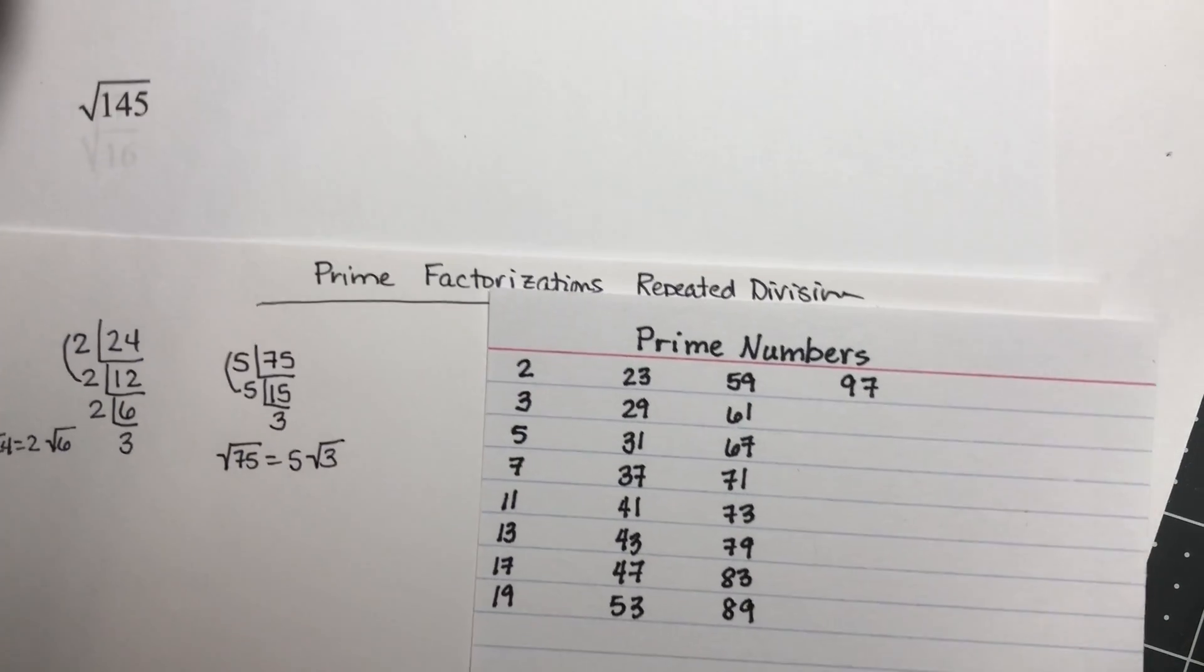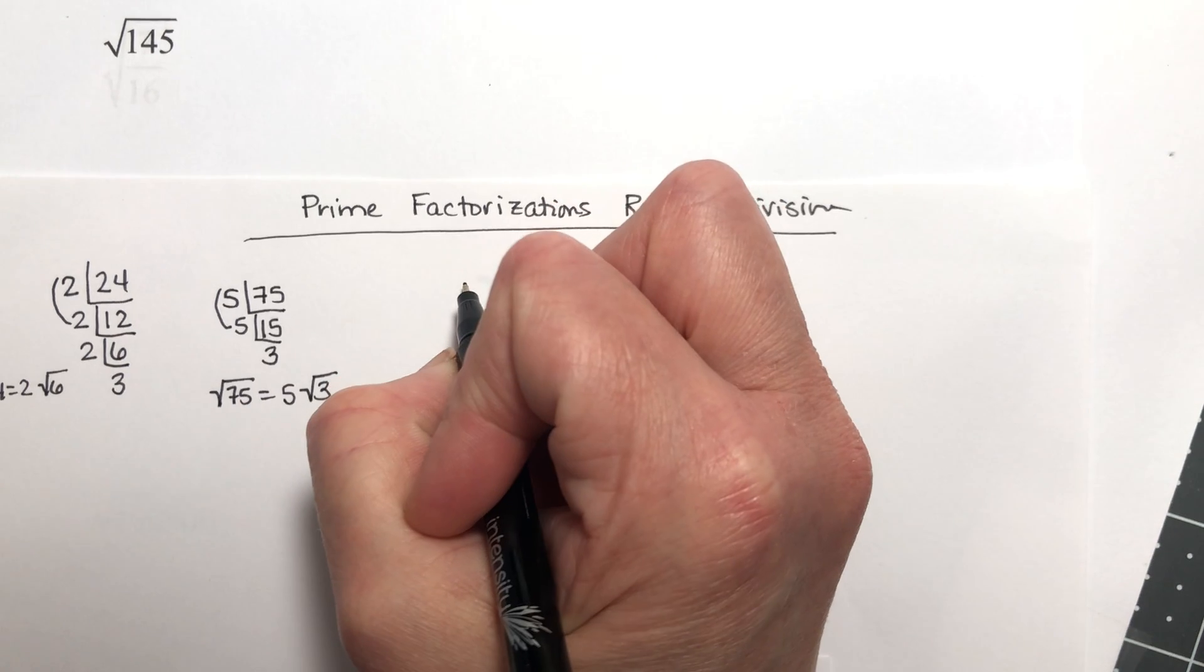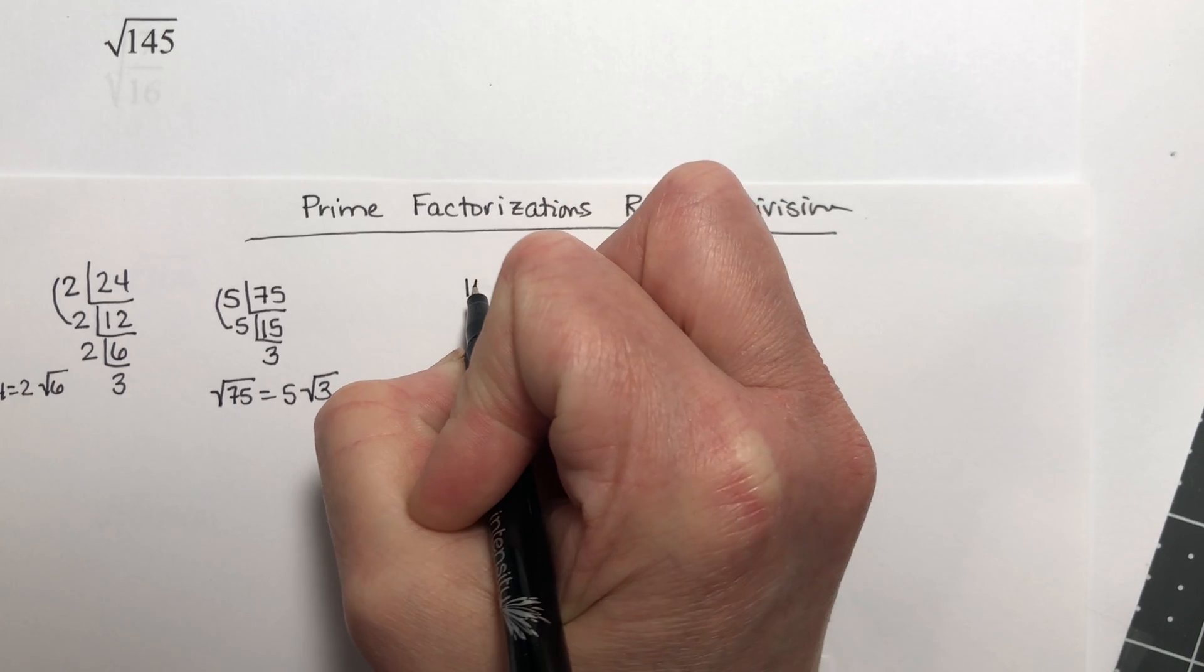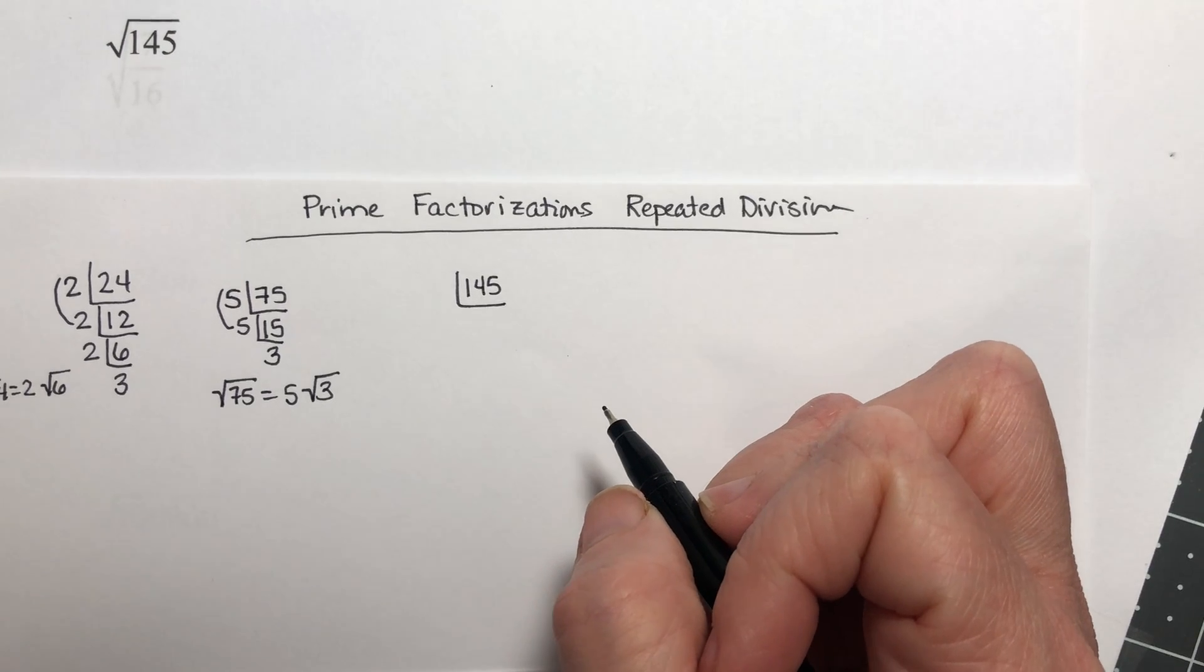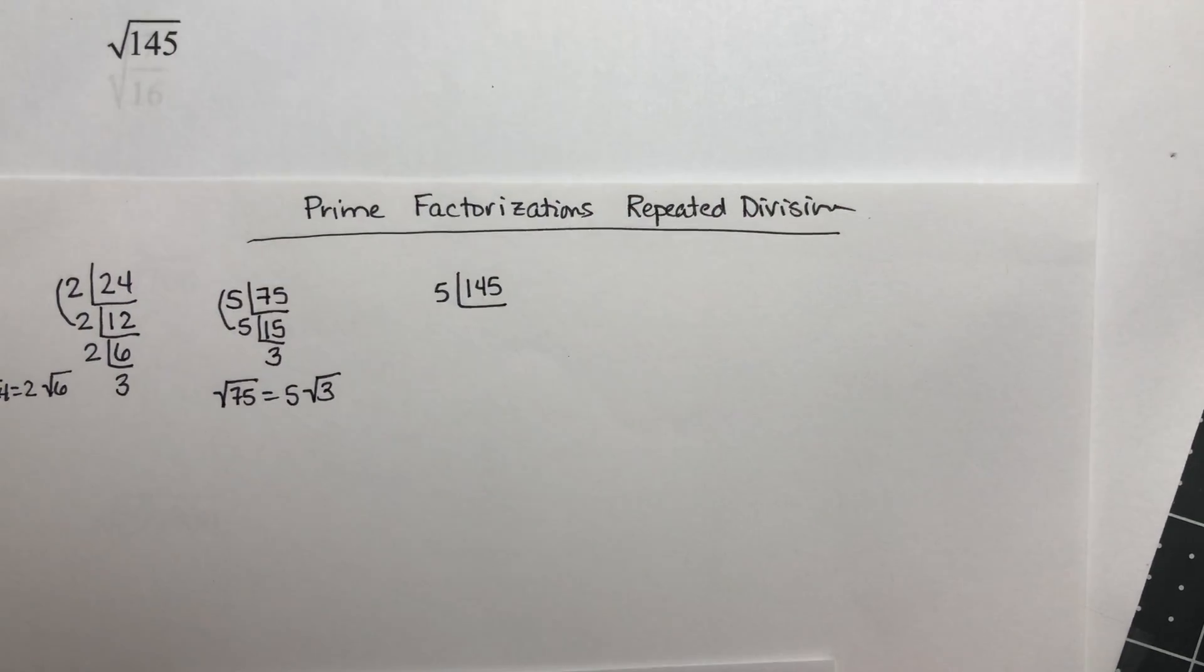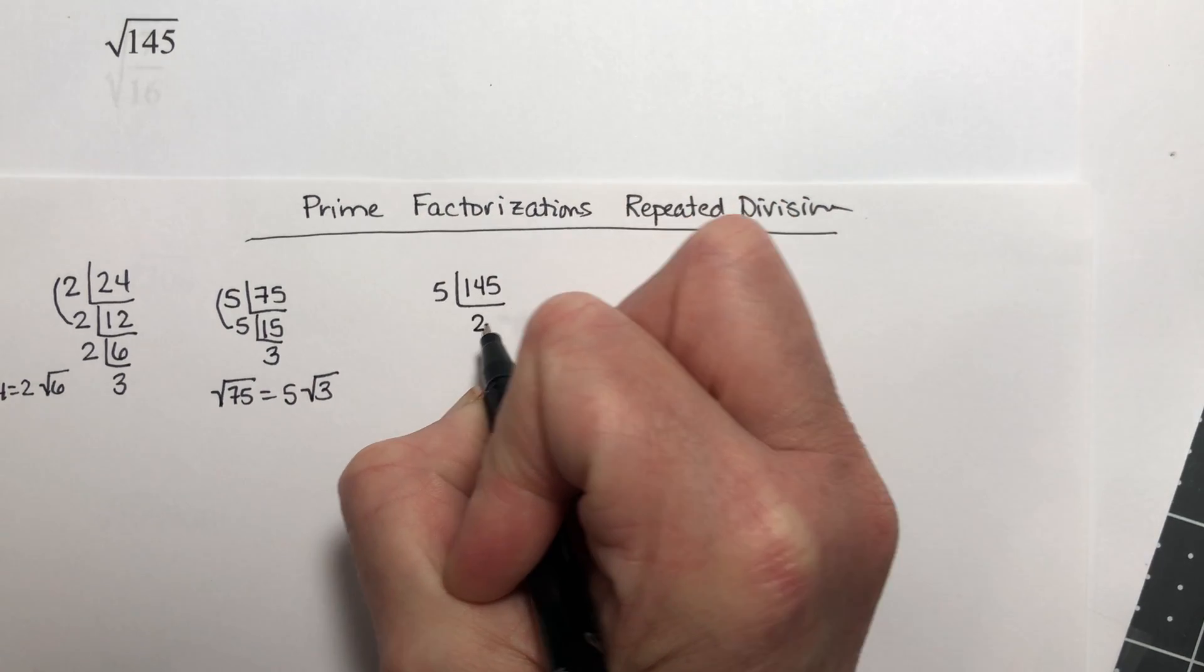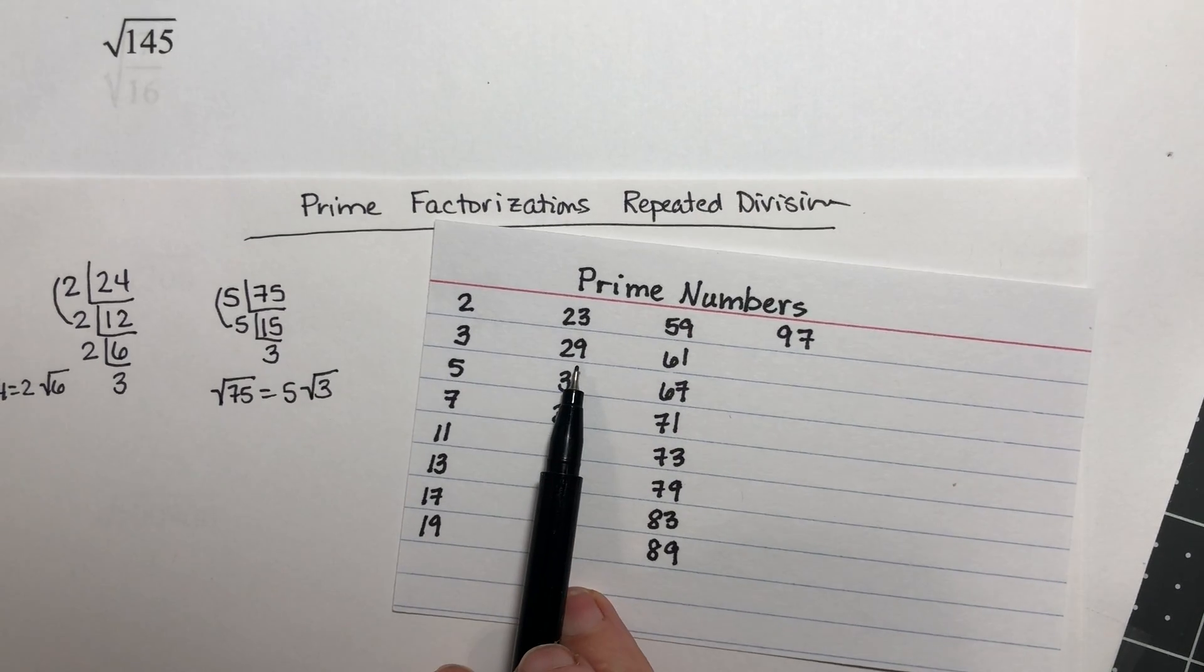Let's try to simplify the square root of 145. So let's find the prime factorization of 145. Well, 145 is divisible by 5 because it ends in a 5. And if I go do that calculation, I get that it is 29. 29 is also a prime number.